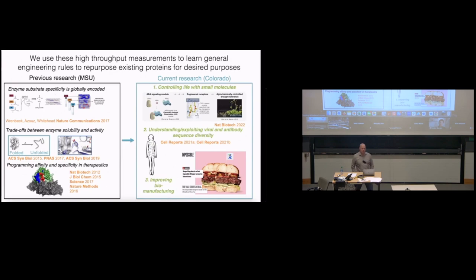Previous research that my lab did was really focused on understanding properties of a class of proteins called enzymes. We also worked a bit in therapeutics, most commonly antibodies. What we're working on right now at Colorado since I moved, we've been able to expand our research program. We work on controlling life with small molecules, understanding the interplay between viral and antibody sequence diversity, and improving biomanufacturing for proteins, most notably the Impossible Burgers that I love.